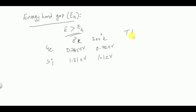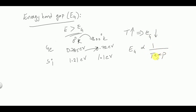As temperature increases, the energy band gap decreases — Eg is inversely proportional to temperature. These values are given at two temperatures: 0 Kelvin, called absolute zero, and 300 Kelvin, called room temperature. For all other temperatures, we can calculate Eg using a formula.